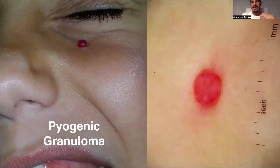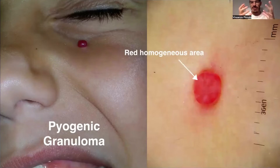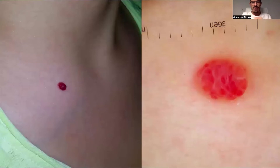In this case, at dermoscopy, what we can see is a red homogeneous area corresponding to a large lacuna — large dilated vessels at histopathological examination.